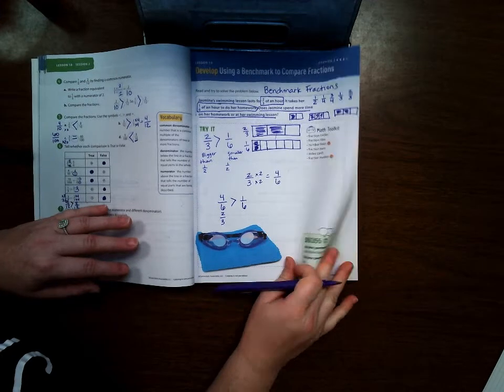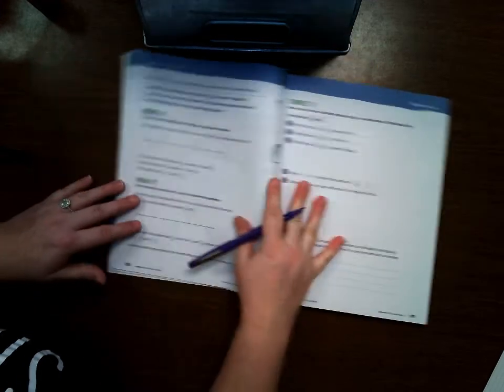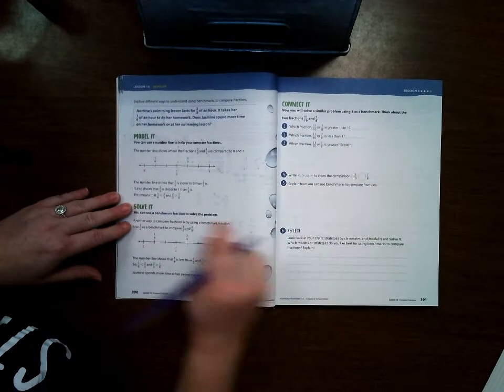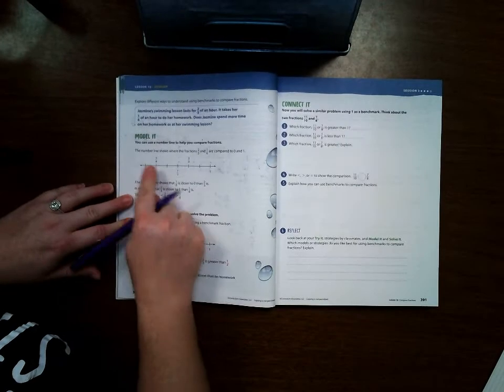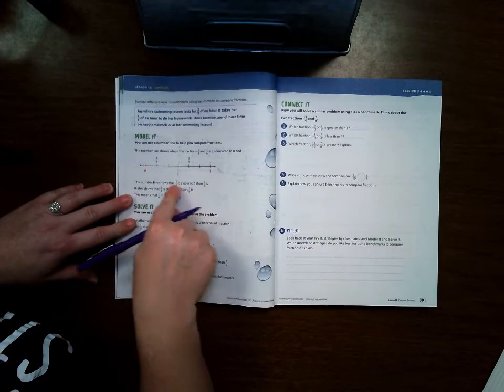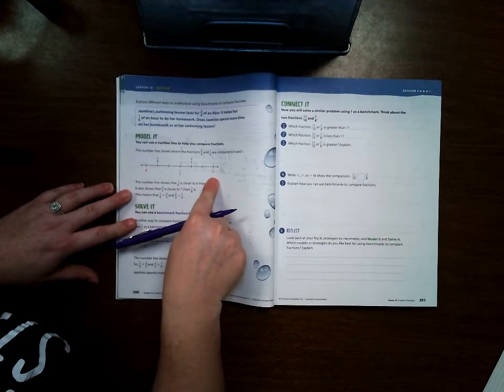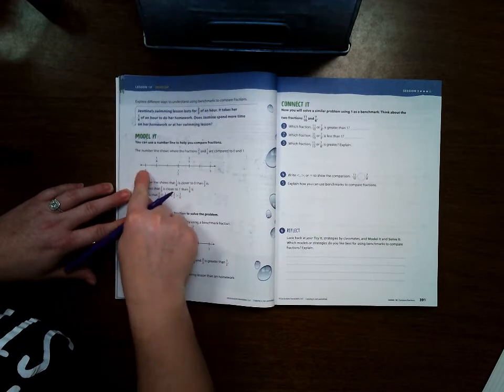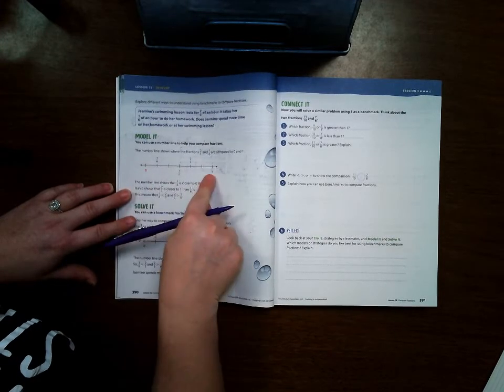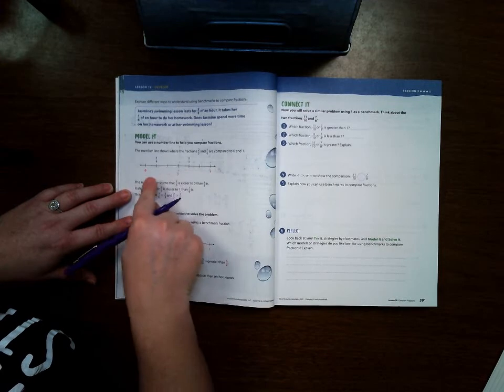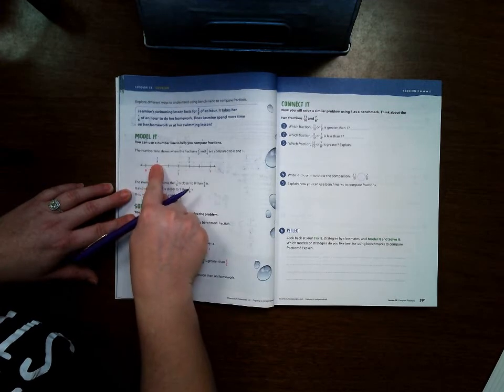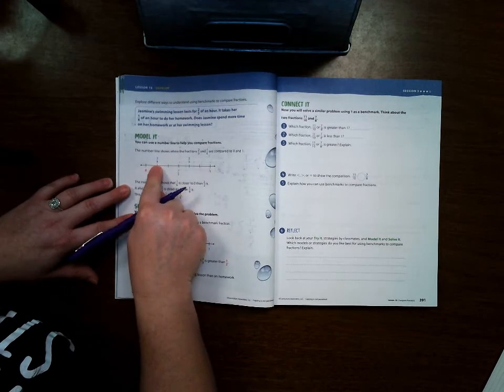All right, let's turn to page 390. Another way that you can compare fractions is by using a number line. And this is where those benchmark fractions come very handy. If you have a number line from zero to one, we're going to divide it up by six because that's the larger number of the denominator.